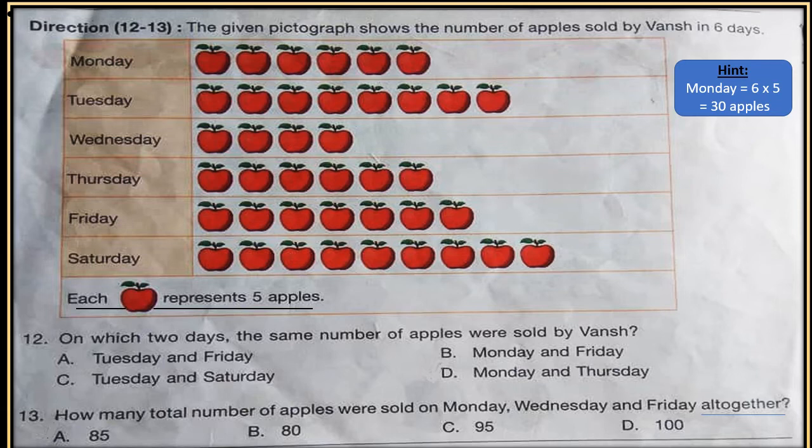And now question number 12: Consider each apple equals to 5 apples. So I have given a hint for Monday. Six apples are there, so one apple represents 5 apples, so it will be 6 into 5, 30 apples sold on Monday. How many total number of apples were sold on Monday, Wednesday, and Friday altogether?